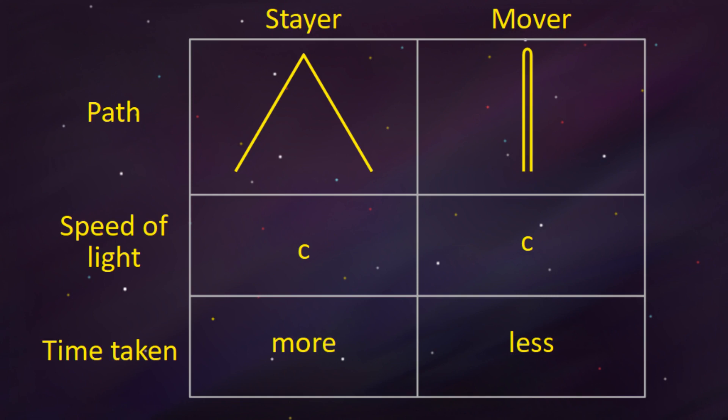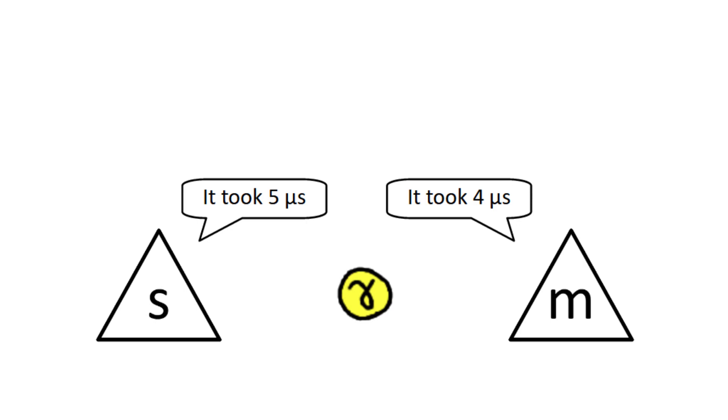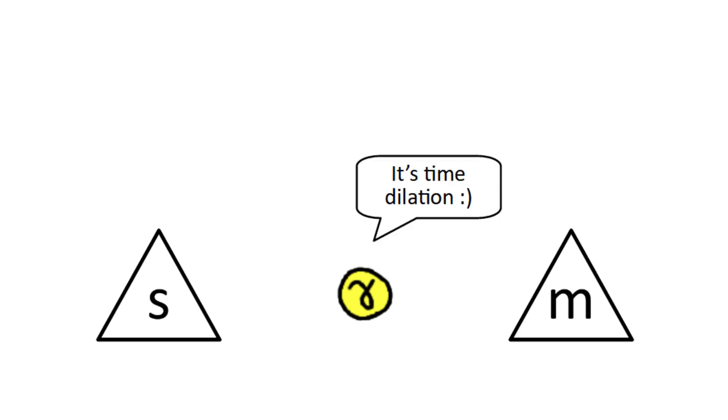In other words, even though both of them are measuring the same event, it takes longer in the stayer's reference frame, meaning that time itself passes at different rates. But we want an exact formula, so we need to introduce some variables.